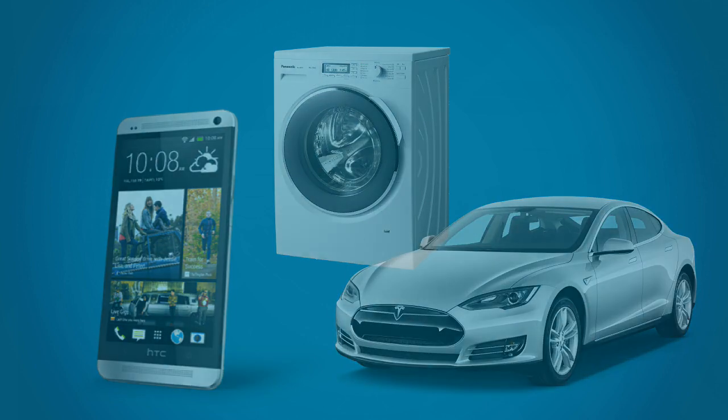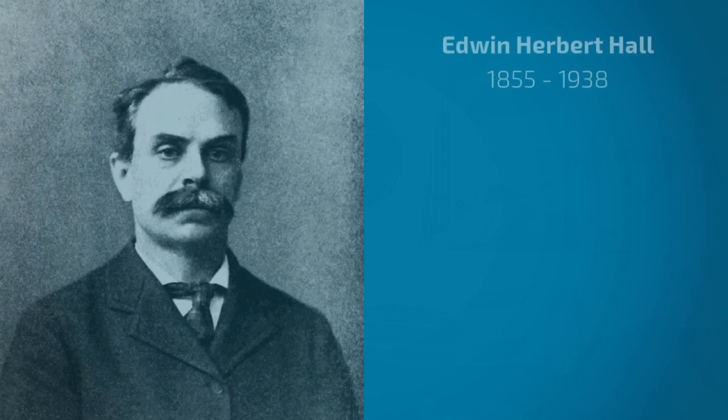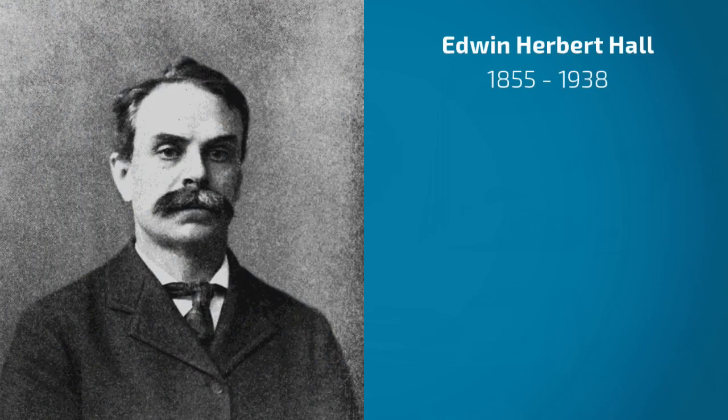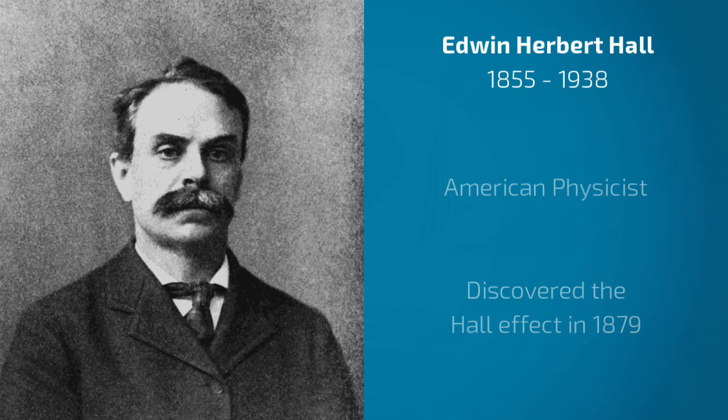Now let's fast forward six years and introduce Edwin Herbert Hall. Hall was an American physicist who discovered the Hall effect and is obviously its namesake. He made this discovery in 1879 while working on his PhD at Johns Hopkins University. That's just six years after Maxwell figured out electromagnetism. So what exactly did he discover?